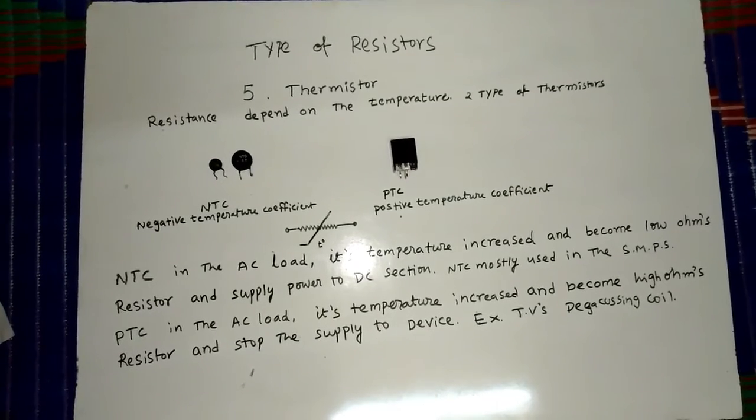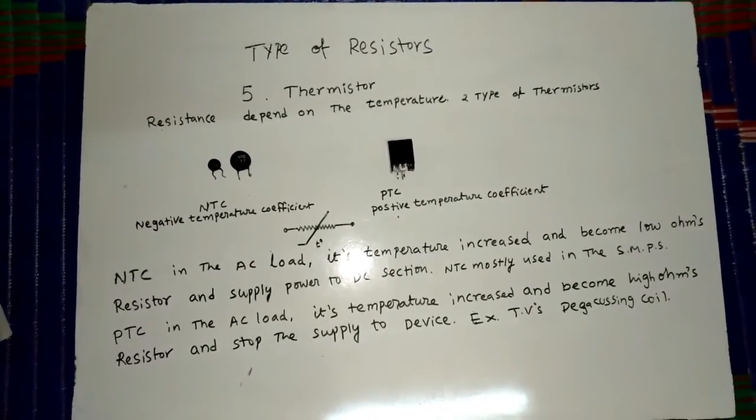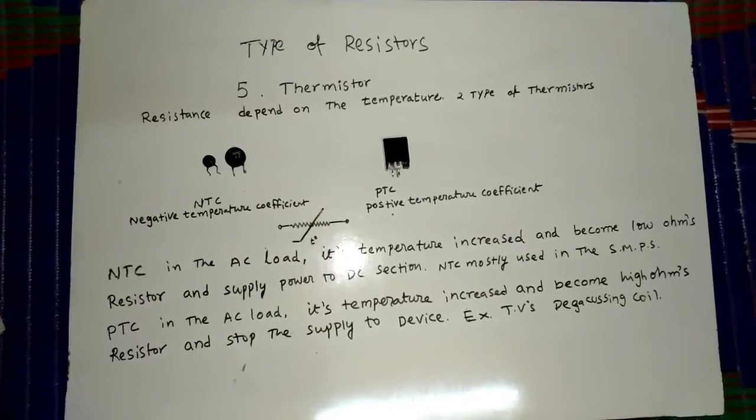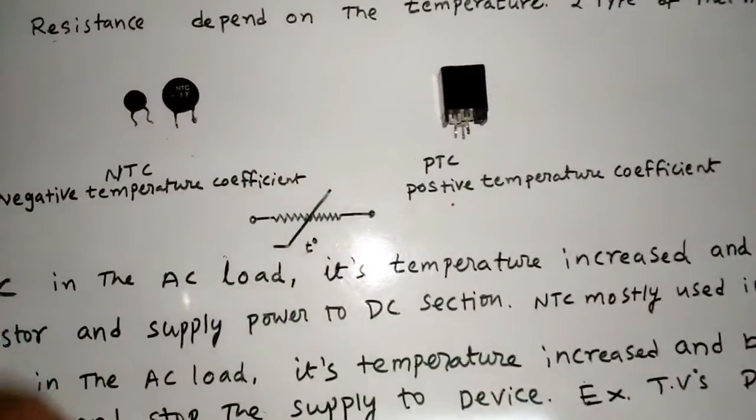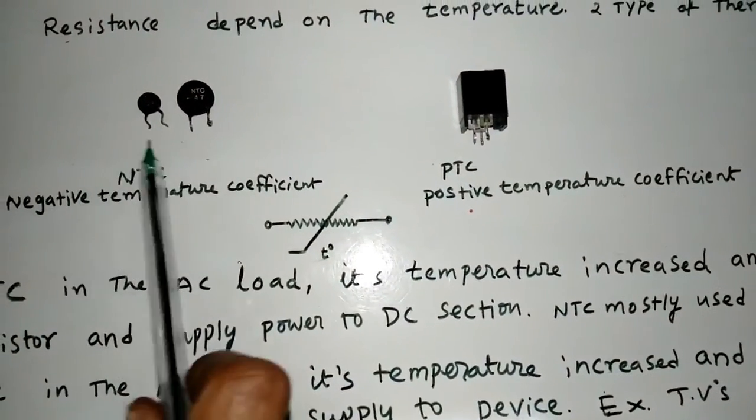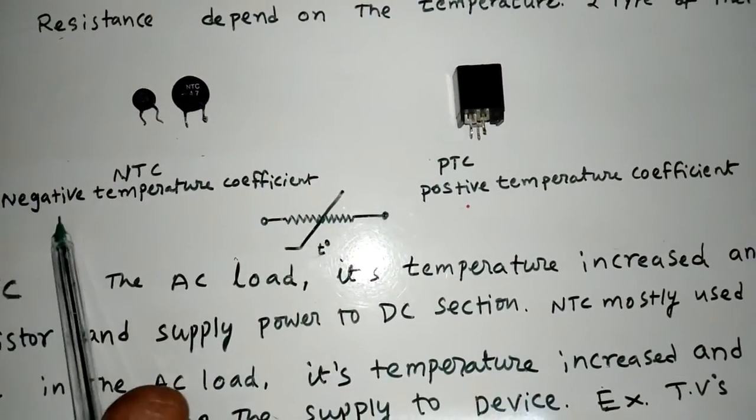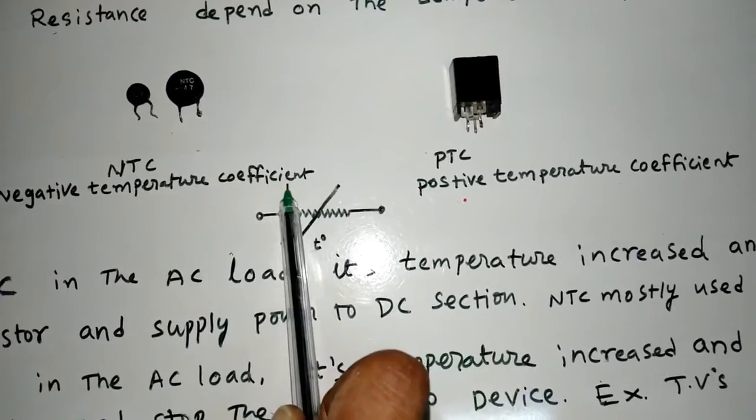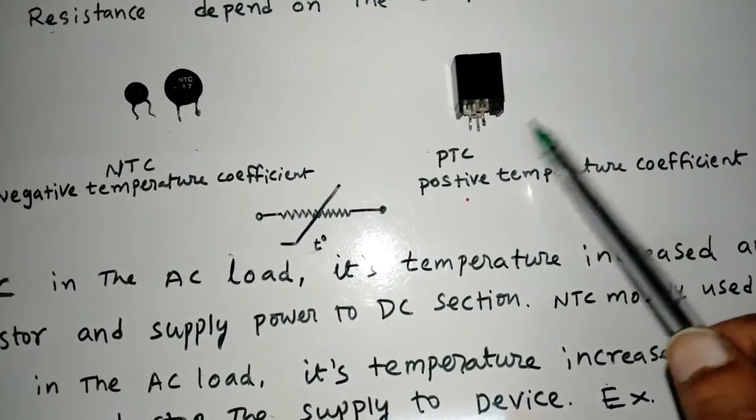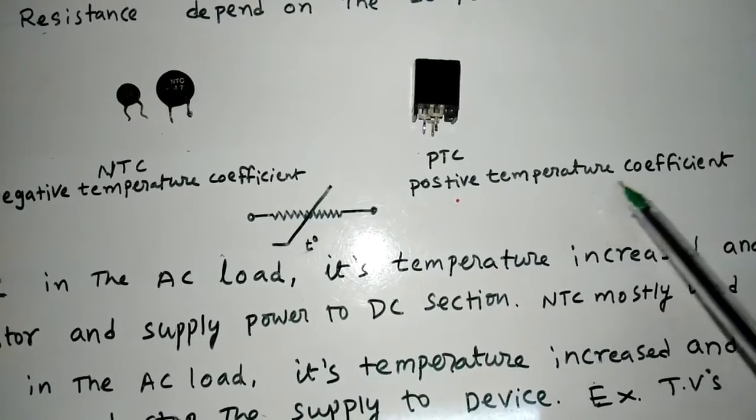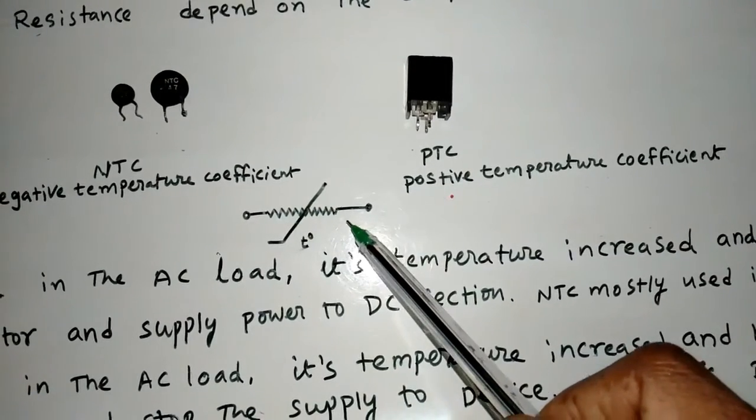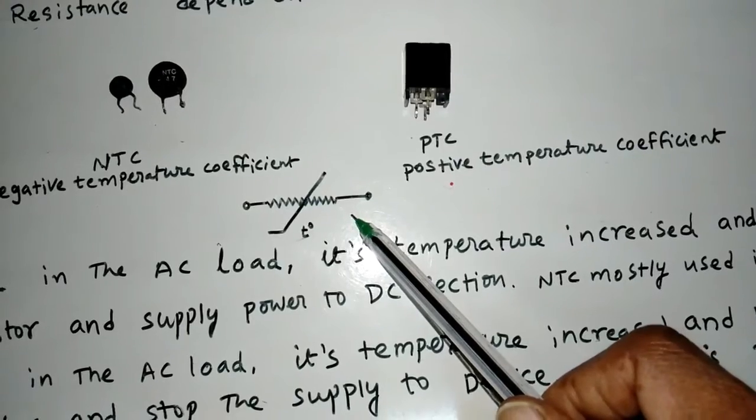Fifth one: Thermistor. Resistance depends on the temperature. Two types of thermistors: One is NTC, Negative Temperature Coefficient. Another one PTC, Positive Temperature Coefficient. This is the symbol of thermistor.